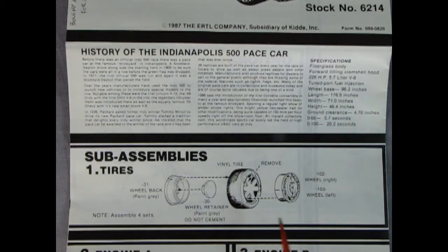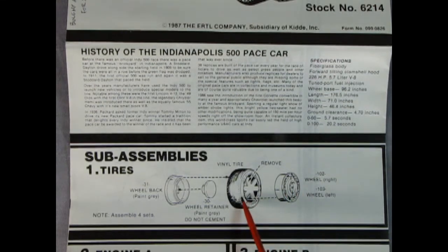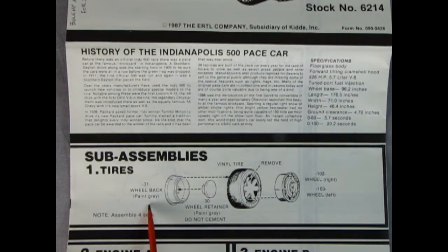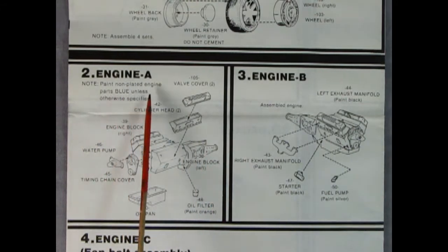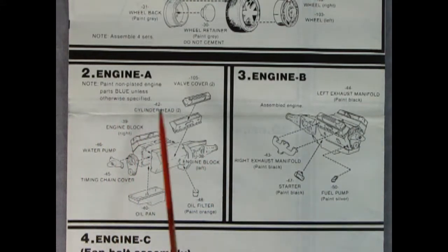We start right away with our wheels. It doesn't show the custom wheel going in here but it does show the stock one and our tires with the web in there. You remove the wheel retainer and the wheel back. It even tells you this time what color to paint it - it doesn't have the little squares like the 1985 car. Panels two and three show the engine going together, and it does say to paint the non-plated engine parts blue, which is interesting.